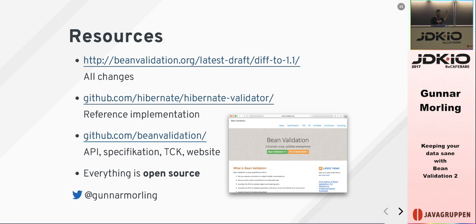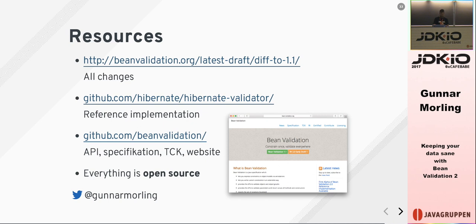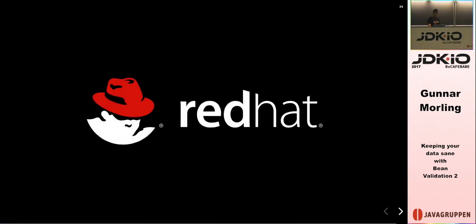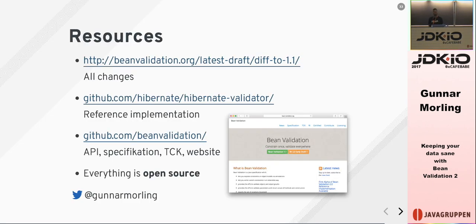Some resources: beanvalidation.org is the central hub — that's the URL to remember. There's also a rendered diff document showing all changes compared to version 1.1, which makes it very easy to review what's new. I would ask you to take a look and share your feedback. Everything is open source on GitHub: the API, the reference implementation, the documentation, and the TCK (test compatibility kit). Each implementation must pass the TCK to be a certified implementation, and the open source nature makes it easy to understand and challenge test cases. Follow me on Twitter for updates.